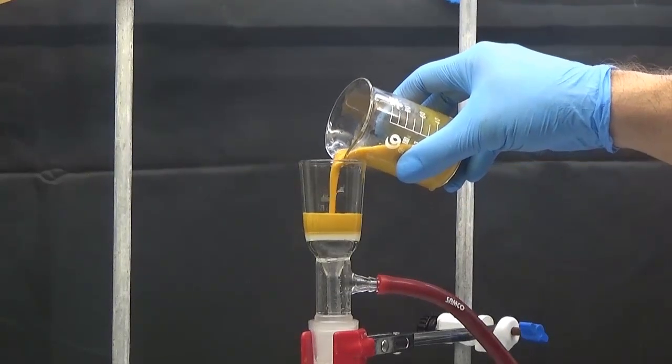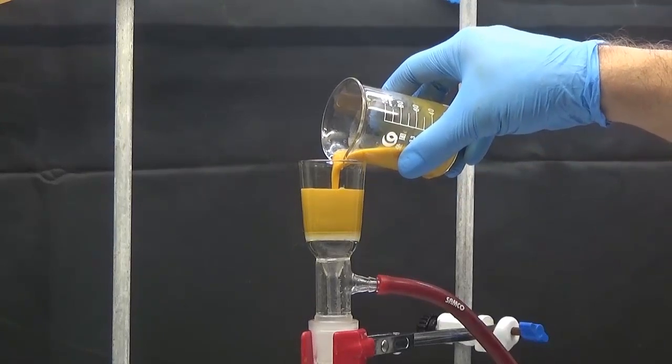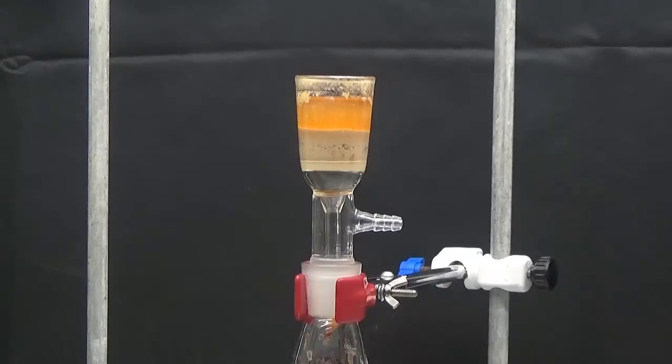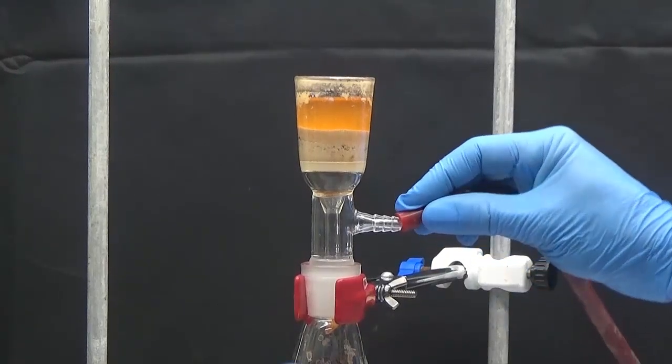Collect by suction the sodium salt of 2-furoic acid formed. Wash the solid three times with 30 ml of ethanol.